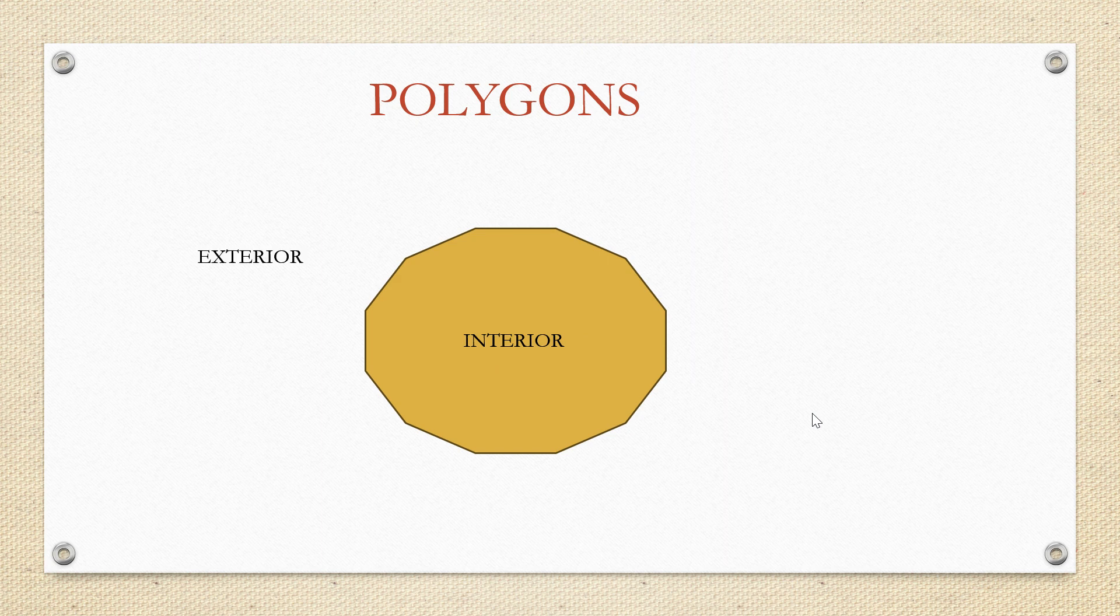When we take points on a plane surface, they can be either on the polygon, here like A, B, C, they are exactly on the line segments. So they are on the polygon.